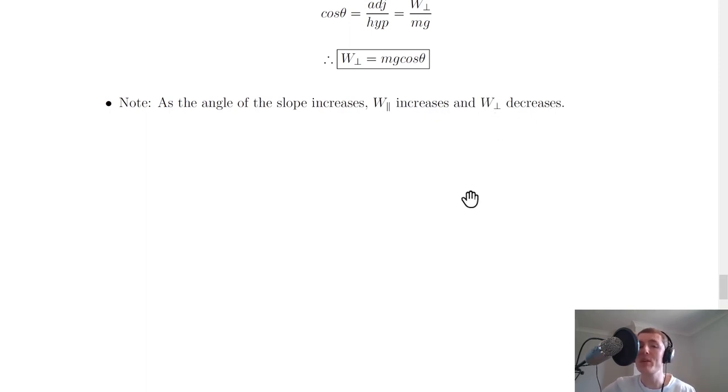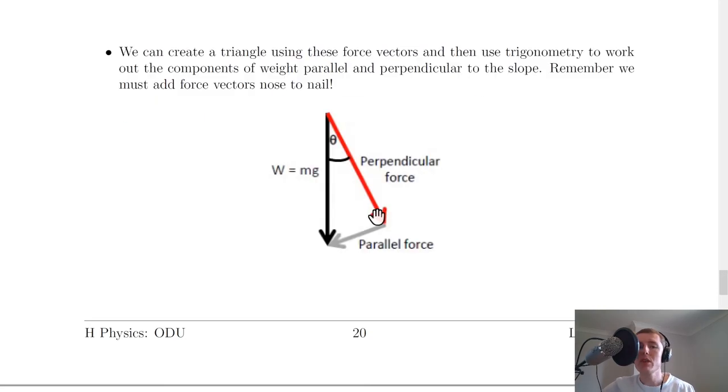That's like what we saw for resolving force vectors where we looked at the Fh and Fv vectors. If we were to rotate this on its side so this was along the bottom and this was the hypotenuse, it would be easier to see. As we decrease angle θ, we move closer to the perpendicular component, so the parallel component gets smaller.